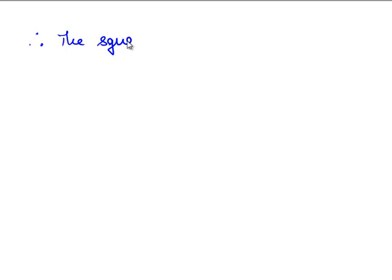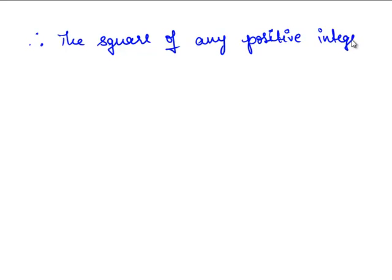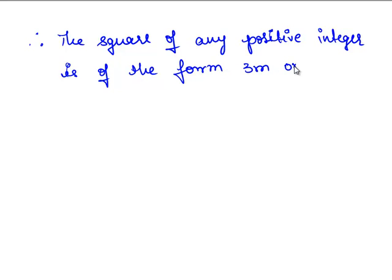Therefore, the square of any positive integer is of the form 3m or 3m plus 1.